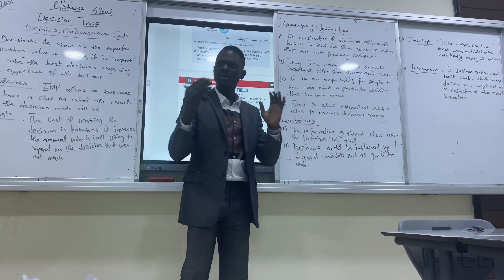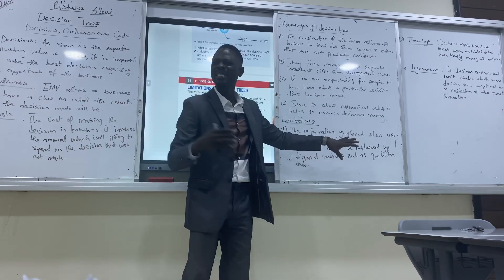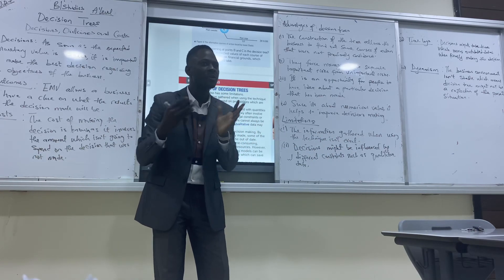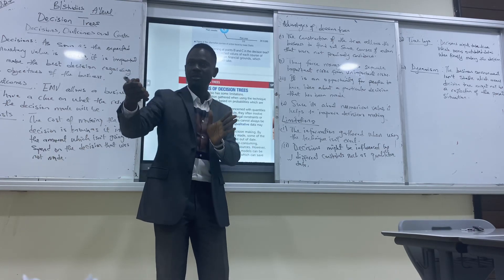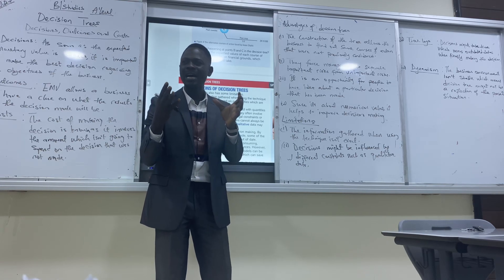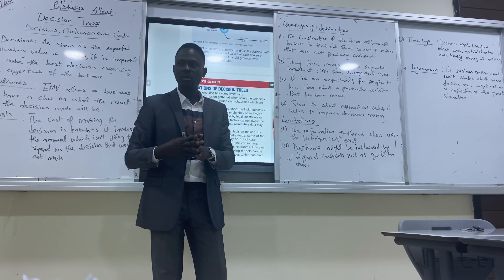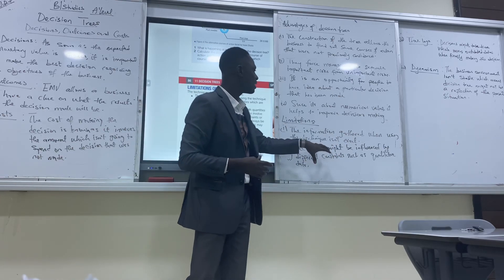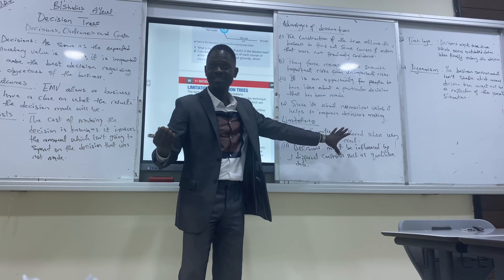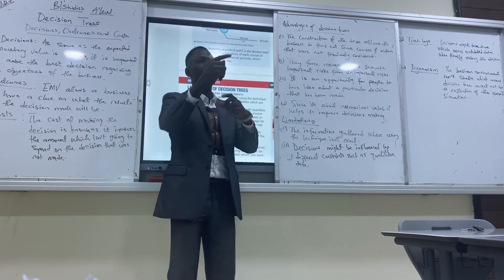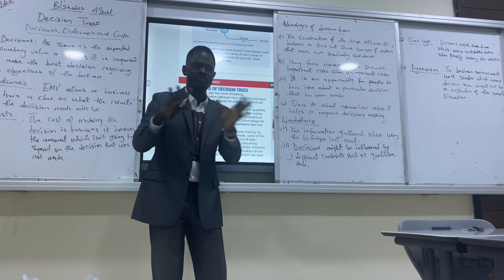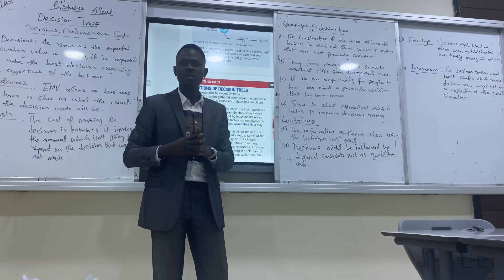What are the problems about using decision trees? The first one: the technique is an estimate — it's not an exact figure. Because it hasn't happened yet, we are forecasting figures so that we can have at least an image of what could happen in the future. That's why the information we are going to use in the technique is not exact; it is an estimate, so it's not real.